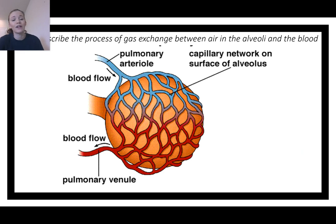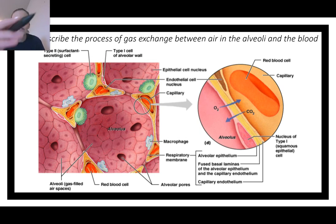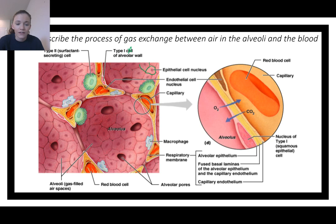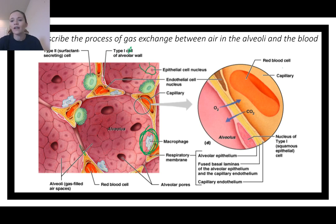In the diagram: a pulmonary arteriole brings deoxygenated blood in — it gets to the alveoli, crosses the air-blood barrier, becomes oxygenated, and then flows back to the heart via the pulmonary vein. In a detailed picture you can see the single layer of epithelium, alveoli with red blood cells passing through capillaries, and macrophages ready to deal with anything that gets all the way to the alveoli.